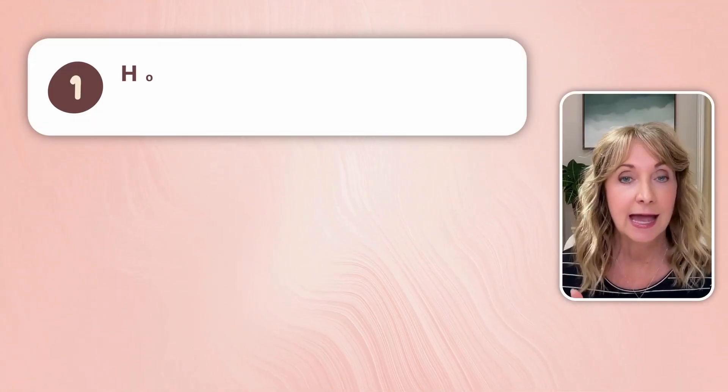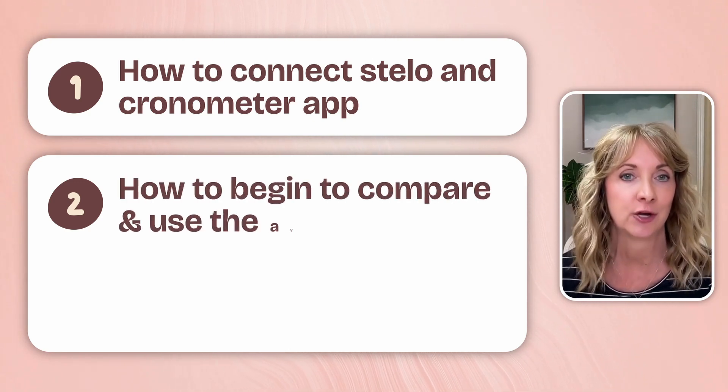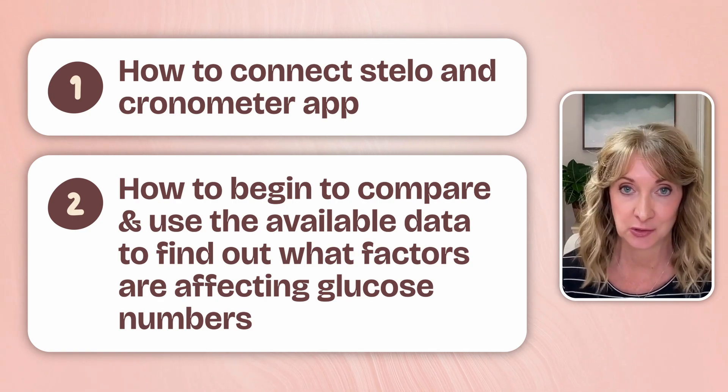And if you're doing both, you can now see all the data in one place. You can set it up so that your Stello app shares data with Cronometer, giving you a comprehensive view of your glucose readings alongside other health variables. This will make your efforts even more effective so that you can quickly reverse blood sugar dysfunction. This video is going to give you the details on how to connect the two apps and how to use the available data to find out what factors are affecting your glucose numbers.